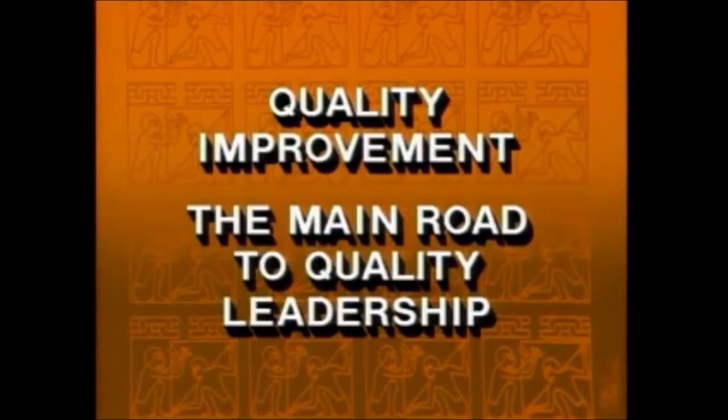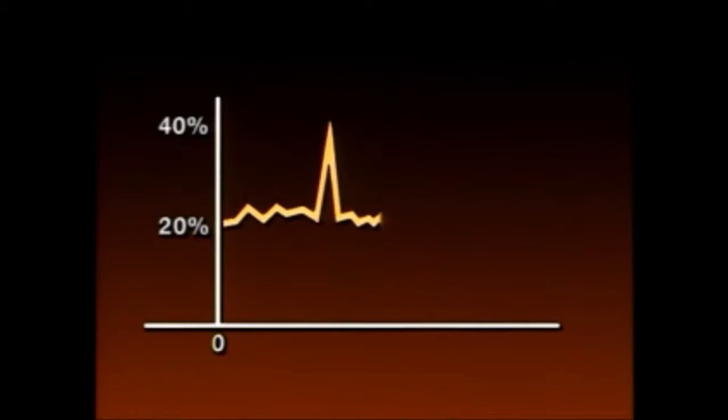The third process in the trilogy is quality improvement. In this model, the result of improvement is to reduce the chronic level of deficiencies from the original 20% down to a much lower level — in this case, about 3%.